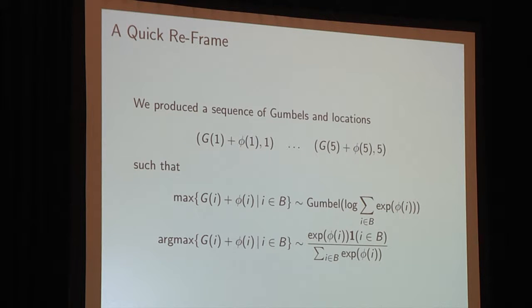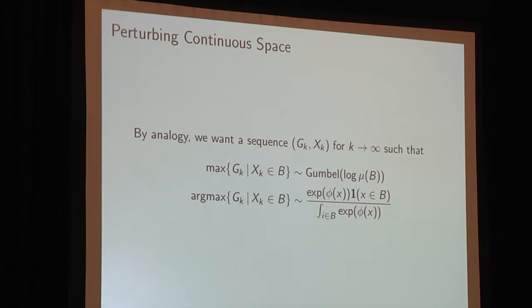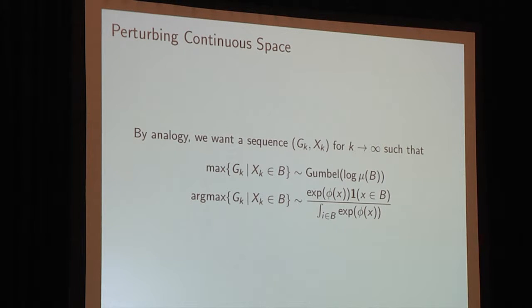I'm going to reframe the first example to clarify the move to continuous space. In the first example, we produced a sequence of Gumbel values — the G_i's plus phi_i's — and their locations, such that the maximum of the Gumbel values for all indices falling in B had distribution Gumbel(log partition function), and the argmax was distributed as the Gibbs distribution restricted to B. By analogy, we want to construct an infinite sequence of Gumbel values and locations in R, such that the maximum value over B has marginal distribution Gumbel(log measure of B), and the argmax is distributed as the Gibbs distribution restricted to B.